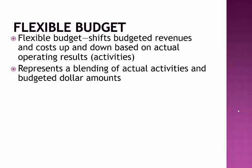It represents a blending of actual activities and budgeted dollar amounts — budgeted dollar amounts for the sales revenues per unit, budgeted dollar amounts based on our standard direct materials allowed per unit and the rate that we expected to pay for those direct materials, our standard quantities of allowed direct labor, and the standard rate that we expected to pay for those. Those are just a few examples of the standard rates that we are going to be using and flexing them for this new actual quantity.